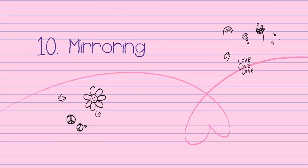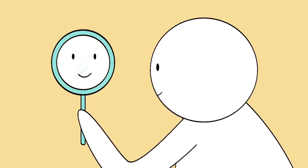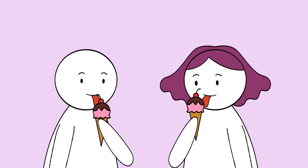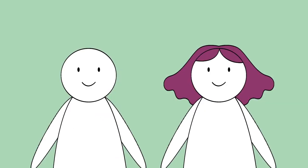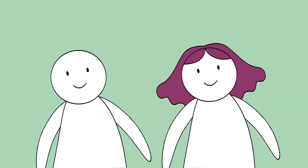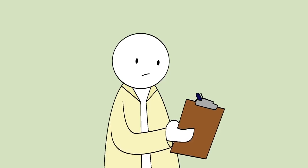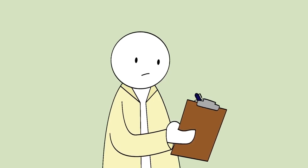10. Mirroring. Another big sign of attraction is mirroring. If you look closely, you might find that your crush seems to be copying your movements and behaviors in a subtle way. It might be tilting their head to the side in the same way as you, or adopting a similar posture. Mirroring has been studied quite intensively in psychological research.